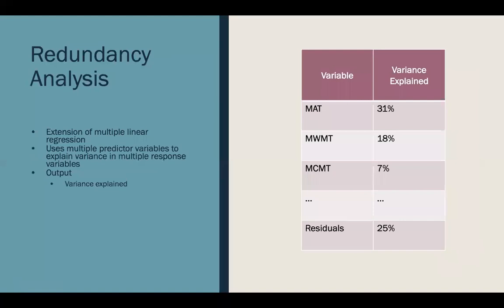The output of redundancy analysis is a table which breaks down each of your predictor variables that you inputted — in our case climate variables — and how much variance each of those climate variables explains in your response data set, in our case the species data set. Additionally, it gives you the amount of variance in your species data set that cannot be explained by these climate variables, and this is called the residuals.